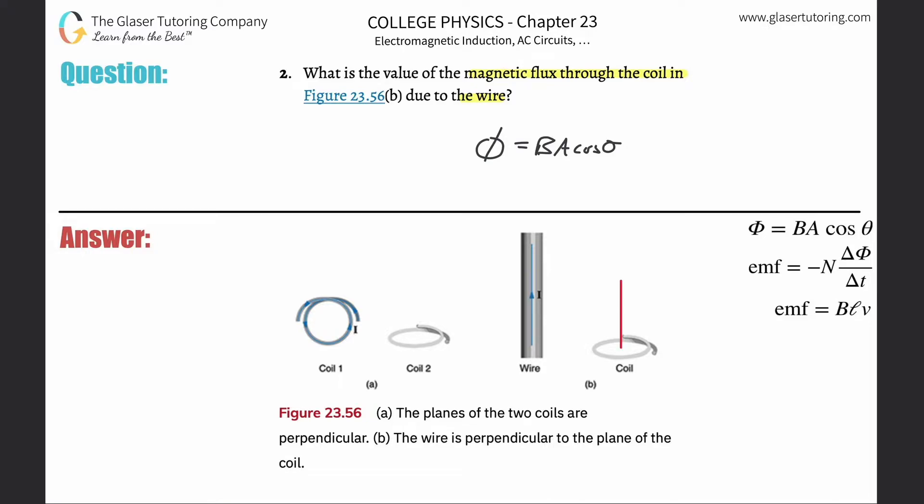So here's the normal to the coil. Now we have to understand what magnetic flux is happening through this coil as a result of the magnetic field being produced by this particular wire.